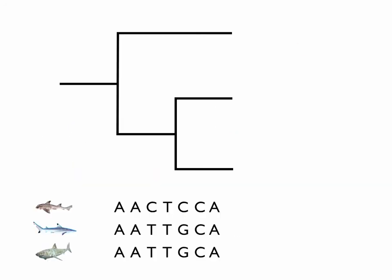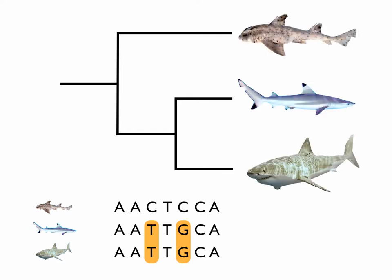For example, let's assume you want to know how three shark species are related to each other. We can look at the DNA sequence from a gene in each of the three species and search for mutations in only some of the sequences. This will tell us that the species that share these mutations will have a common ancestor where the mutations first arose. Because using only a few characters can lead to erroneous or unresolved relationships, the number of characters we use can be very important.